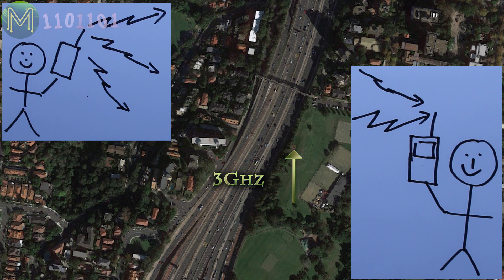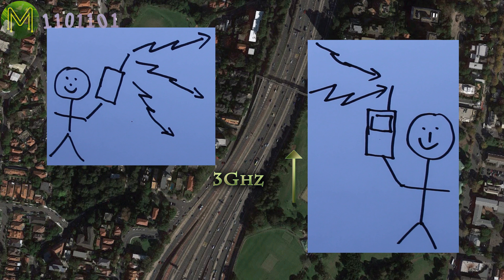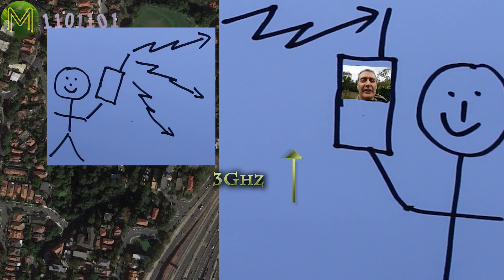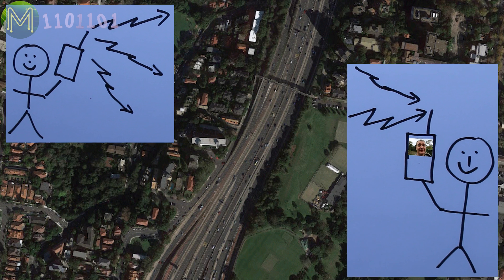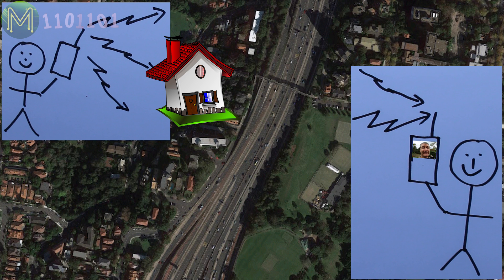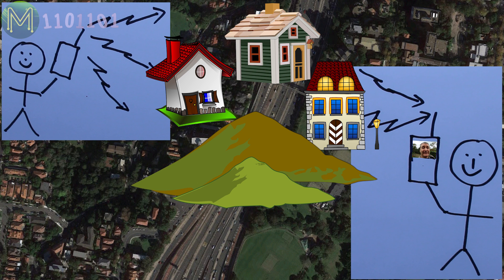The higher the frequency, the shorter the range. Three: the longer the communication distance, the greater the risk of interference. The more interference there is, the greater the risk of data loss or reduced bandwidth.